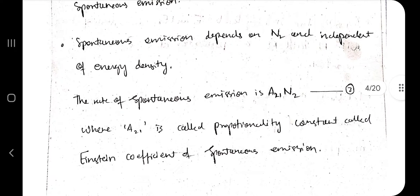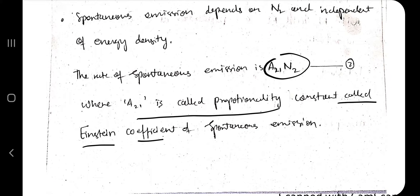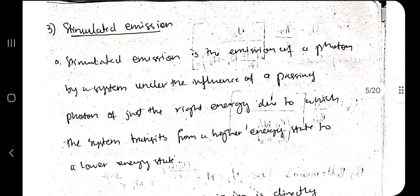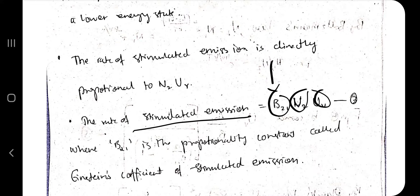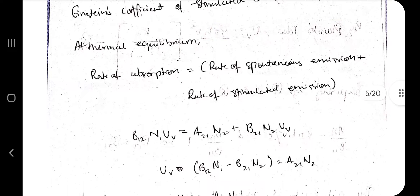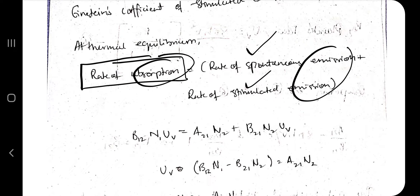For spontaneous emission, the rate equals A21 times N2, where A21 is Einstein's coefficient for spontaneous emission. For stimulated emission, the rate equals B21 times N2 times U(nu), where B21 is the corresponding coefficient. At thermal equilibrium, the rate of absorption equals the rate of spontaneous emission plus the rate of stimulated emission, so we substitute these three formulas and simplify.